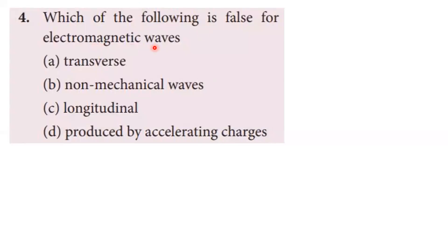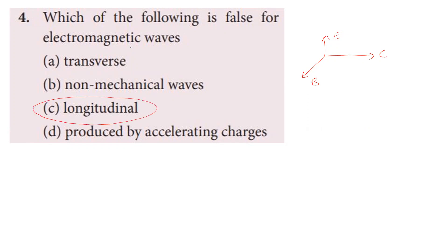Fourth question: which of the following is false for electromagnetic waves? In a transverse wave, particles oscillate perpendicular to propagation; parallel to propagation would make it a longitudinal wave. In an EM wave, propagation is in the x-direction, electric field in y-direction, magnetic field in z-direction — both perpendicular to propagation, making it a transverse wave. EM waves do not require a medium; they are non-mechanical waves produced by accelerating charges. So the claim that EM waves are longitudinal is false. Option three is the correct answer.